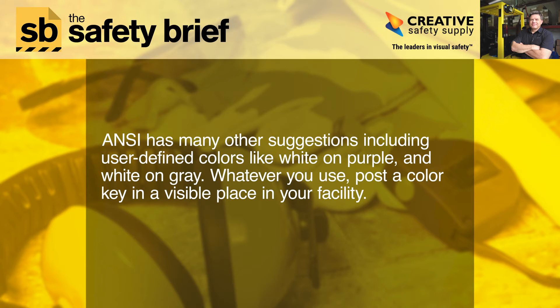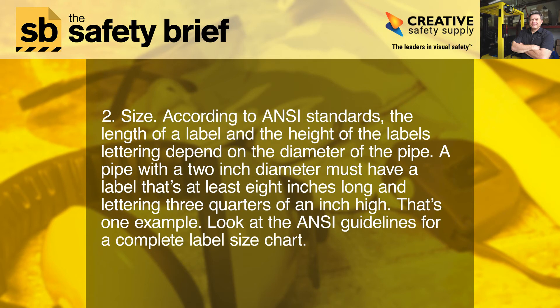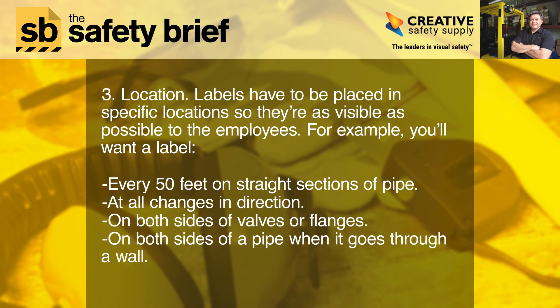Whatever colors you use, post a color key in a visible place in your facility. Two: size. According to ANSI standards, the length of a label and the height of a label's lettering depend on the diameter of the pipe. For example, a pipe with a two-inch diameter must have a label that's at least eight inches long with lettering three-quarters of an inch high. Look at the ANSI guidelines for a complete label size chart.